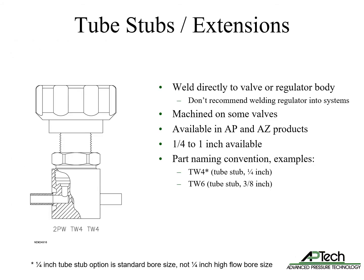Welded tube stubs or tubing extensions are standard connection options for the AP and AZ-series valves and regulators; however, we don't recommend welding regulators into gas systems. Some valves feature machined tube stubs. Tube stubs are available in 1/4 to 1 inch sizes. The part naming convention is TW for tube followed by the size, such as 4 for 1/4 inch. 1/4 inch stubs are true 1/4 inch bore size, not HF size.